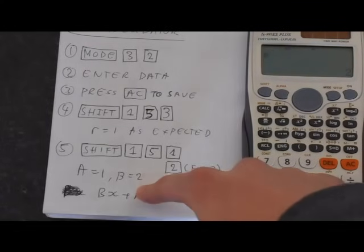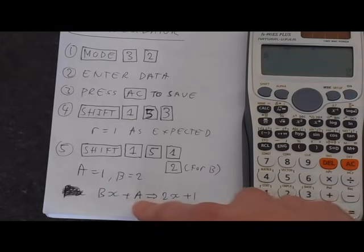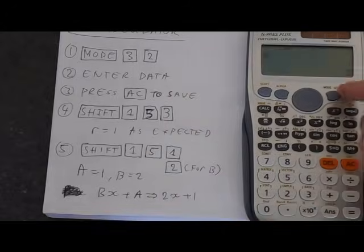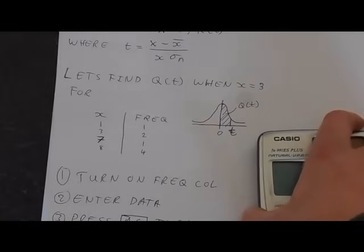We've got A equals 1, B equals 2. The equation of the line is going to be BX plus A, so do the substitution, and you get 2X plus 1, as we expected. That's how you do Pearson's R in regression, very quickly.